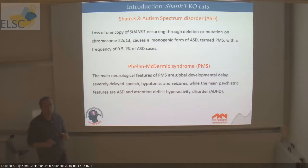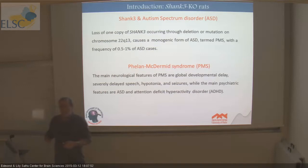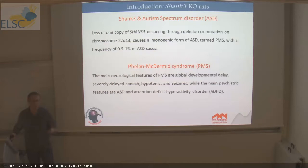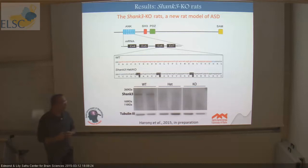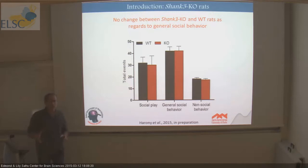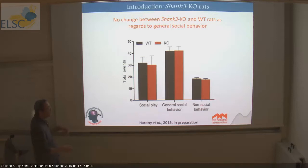There are several lab mouse models for Shank3 mutation. We were fortunate to get the first model of Shank3 knockout rats — actually the first model of monogenic autism in rats — from our collaborator Joseph Buchsbaum at Mount Sinai. The gene was knocked out by inserting several stop codons in exon 6 within the ankyrin-binding domain. We can see the level of Shank3 expression: much less in heterozygotes and nothing in knockout (homozygous) rats. Our collaborators found no difference between wild type and knockout rats in social play, general social behavior, or non-social behavior. They were quite disappointed and sent us the animals to check.